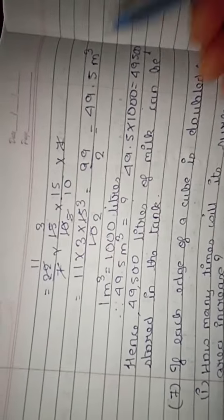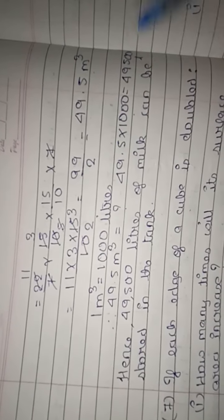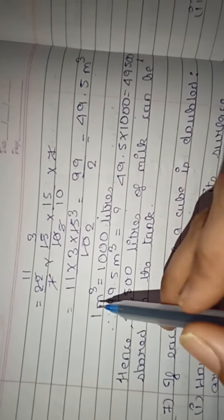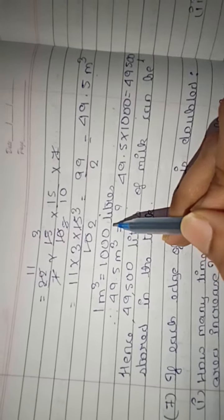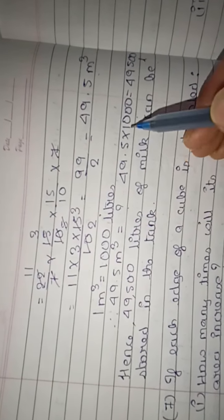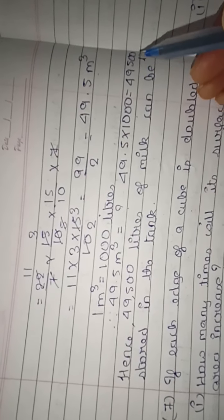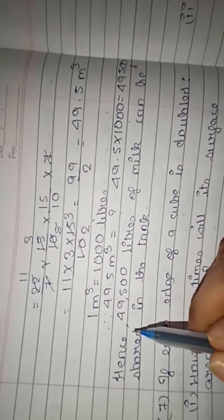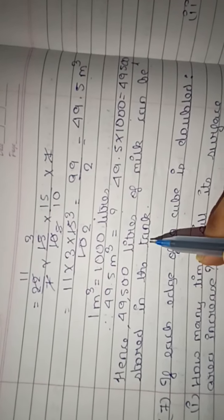The volume of the tank is 49.5 meter cube, and we have been asked for the answer in liters. Conversion: 1 meter cube = 1000 liters, so 49.5 meter cube = 49.5 × 1000 = 49,500 liters. Hence, 49,500 liters of milk can be stored in the tank.